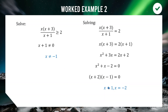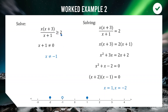This example has three critical values: −2, −1, and 1. We draw a number line with hollow dot at x = −1 (denominator zero, never included) and filled dots at x = −2 and x = 1 (from the equation, included because the inequality is ≥). We now have four regions to test.